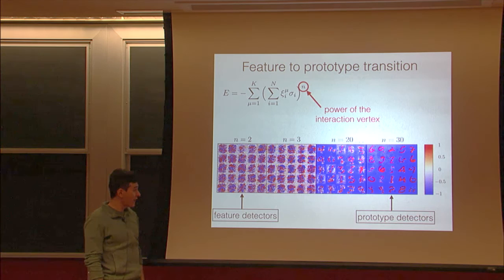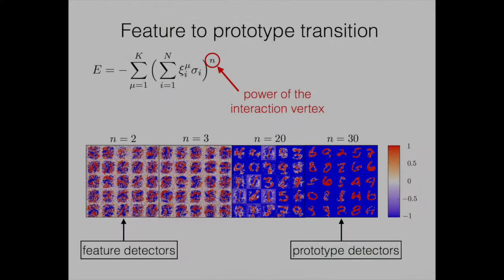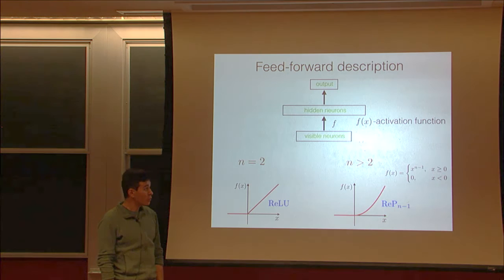For small values of n, the network learns feature detectors. But as the power of the interaction vertex is increased, there is a gradual shift to the prototype-based representation. These are the two extreme regimes of pattern recognition known in cognitive psychology. Although the weights are very different for different values of power n, the classification accuracy remains almost the same.